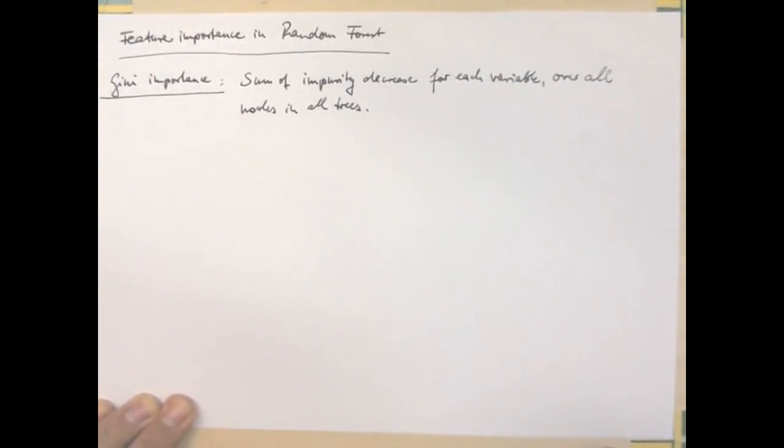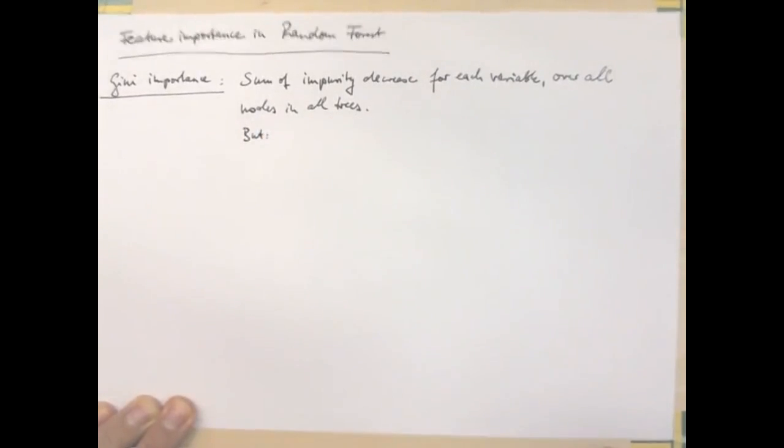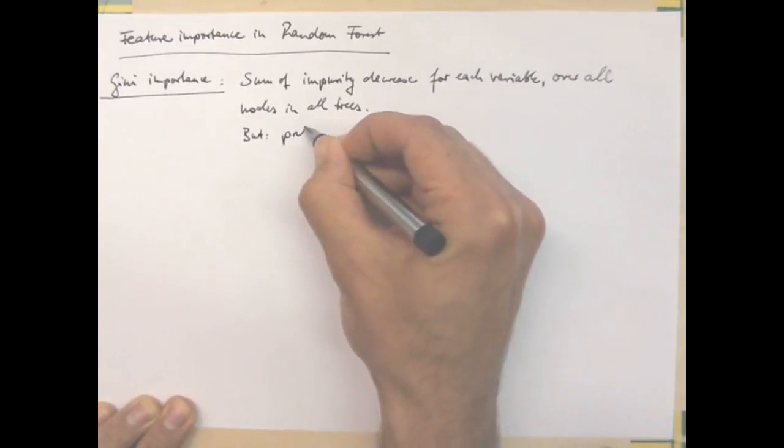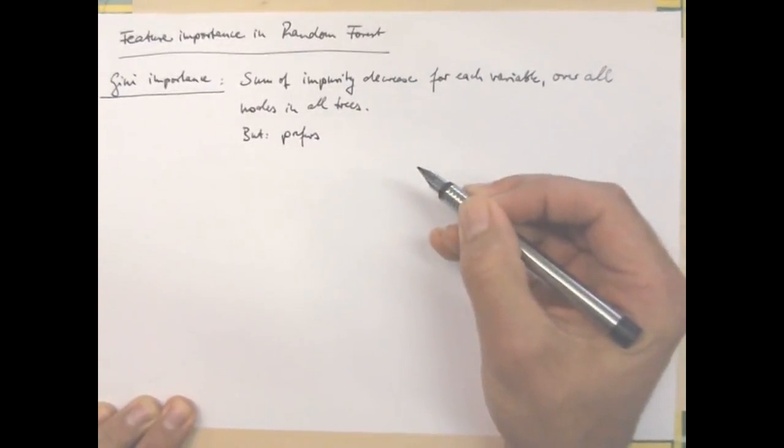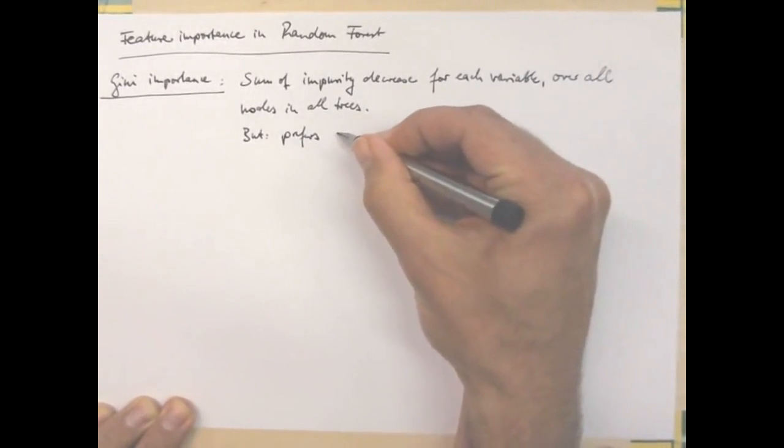It has the advantage that this is very simple to compute, so minimal overhead. But it also has a few problems. In particular, it is biased, so it prefers those categorical variables if you have such variables in your features.